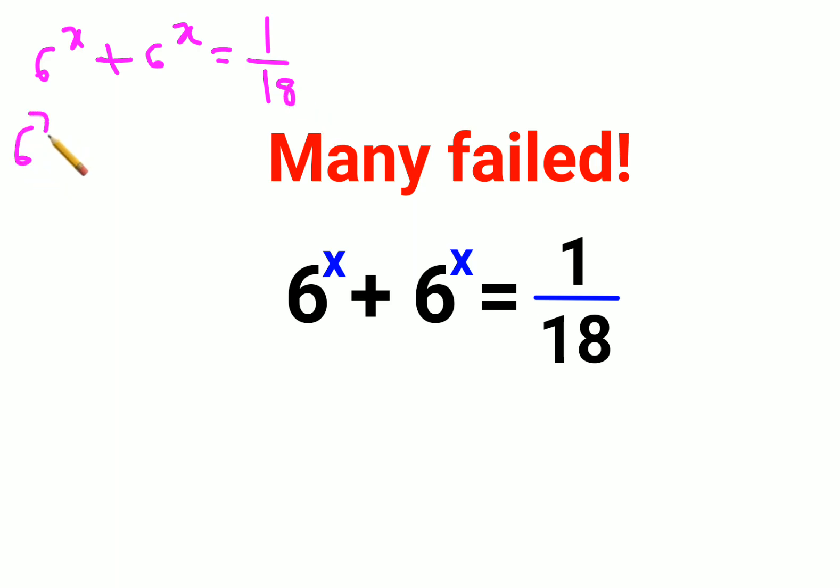So we will take 6 raised to x common and left with 1 plus 1 equals to 1 upon 18. So we have 6 raised to x into 2 equals to 1 upon 18.